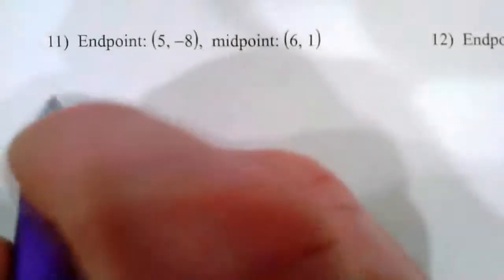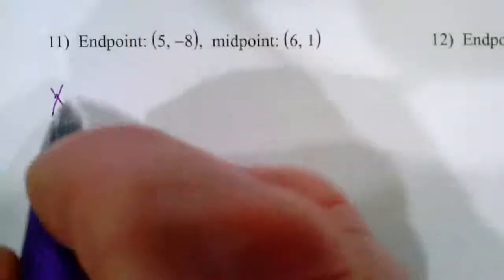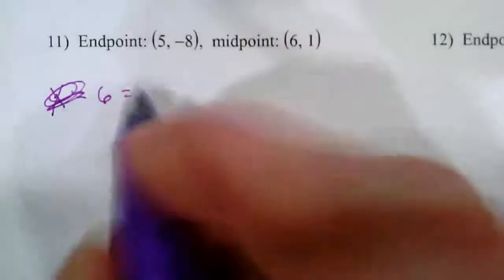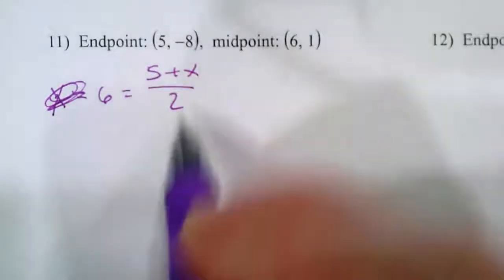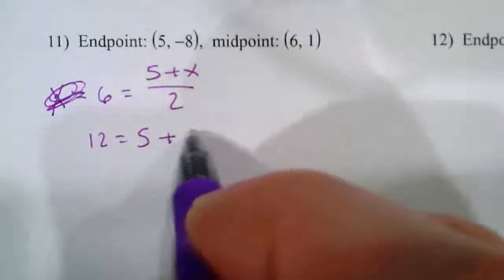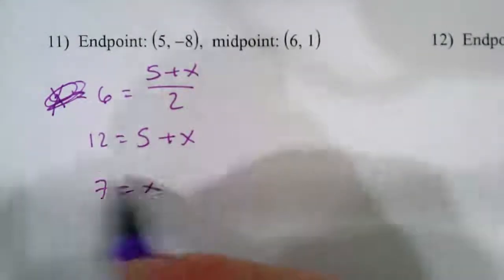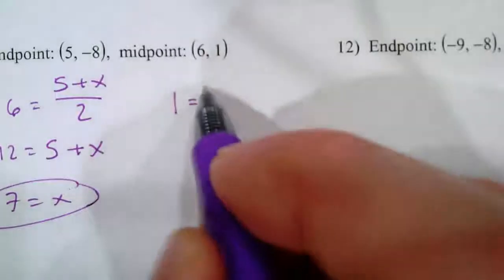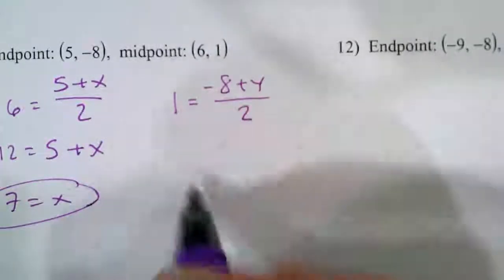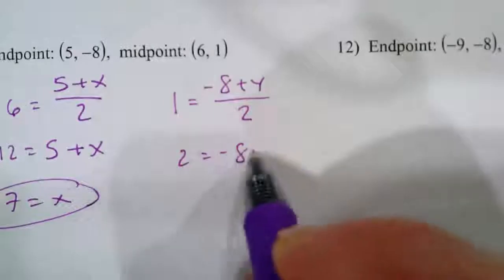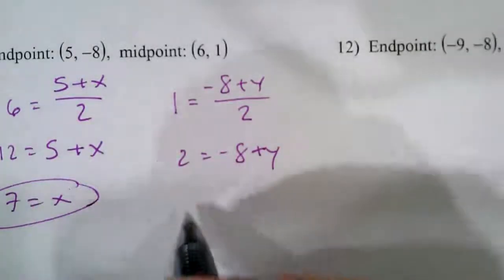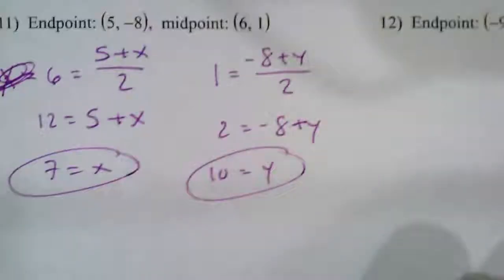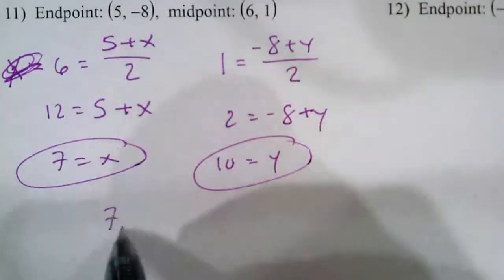Going down here, let's try another one. So we'd have 6 equals 5 plus x over 2. Multiply both sides by 2, then subtract 5: 7 equals x. For the y-coordinate, we have 1 equals negative 8 plus y over 2. Multiply both sides by 2 and add 8 to both sides. So our new pair of coordinates would be 7, 10.